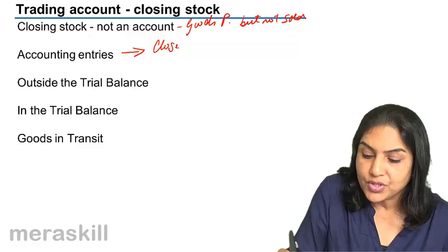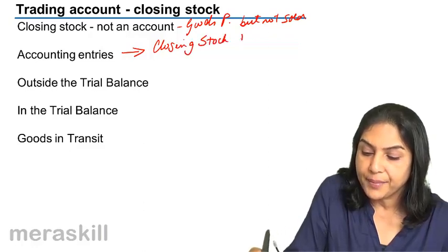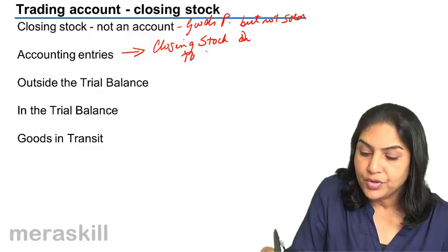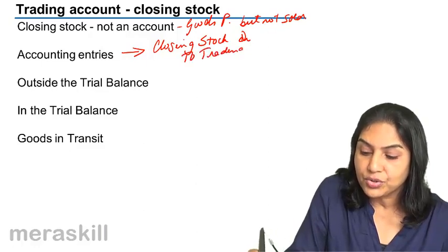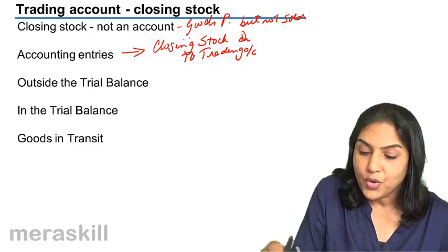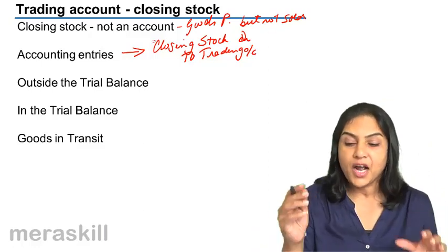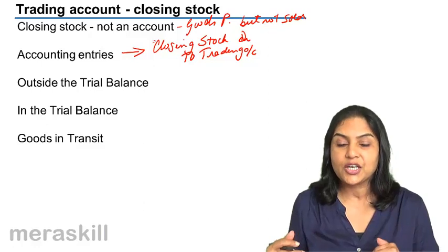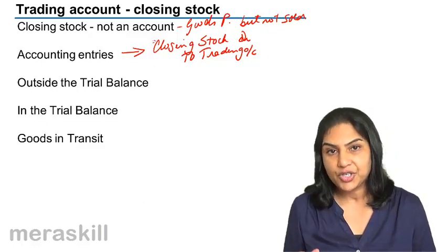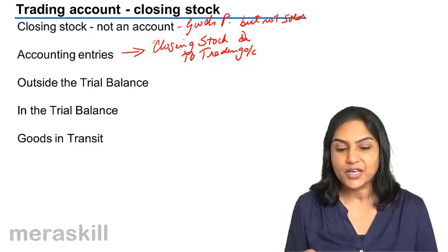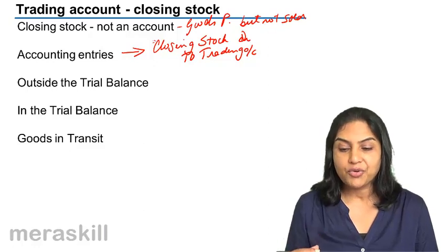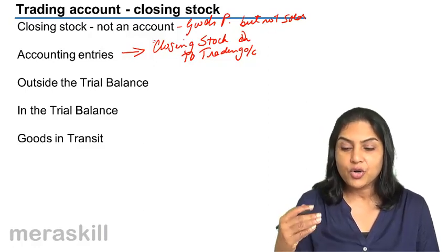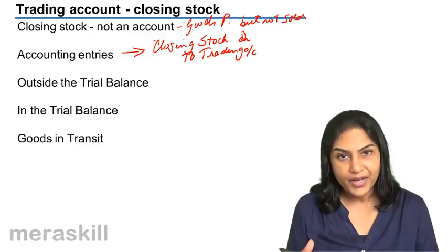The entry we pass is: Closing Stock Account debit to Trading Account. An account called closing stock is created, which is taken to the asset side of the balance sheet. So the accounting entry is: Closing Stock Account debit to Trading Account.